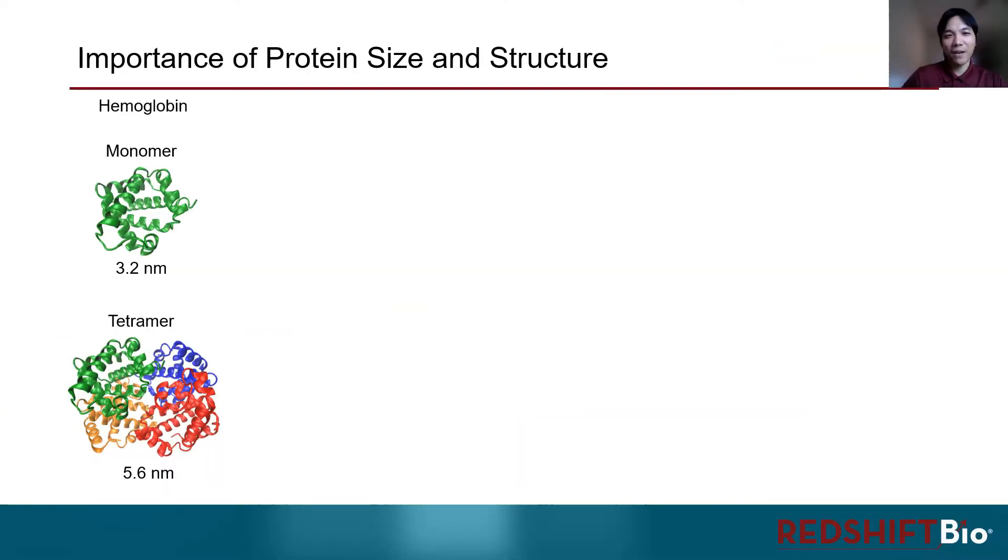Why do we care about the size of proteins? Well, it's simply because the size can tell us a lot about the protein structure, especially its tertiary and quaternary structures. Now let's take a look at hemoglobin as an example here. The monomer of hemoglobin is a globular protein with a diameter of 3.2 nm. However, under natural physiological condition, hemoglobin is actually a tetramer, comprised of four identical monomers, and its overall diameter is increased to 5.6 nm. As we can see, the size of the protein can be an indicator of its correct multimeric state.